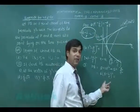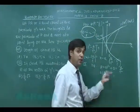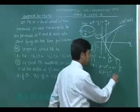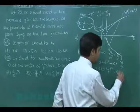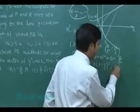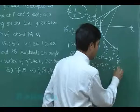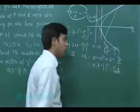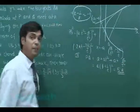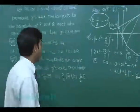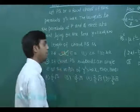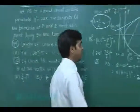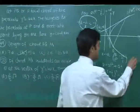Since t - 1/t = -1, we can rewrite (t + 1/t)² as (t - 1/t)² + 4 = 1 + 4 = 5. Therefore, the length of the focal chord is 5a. Option B is correct for the first question.